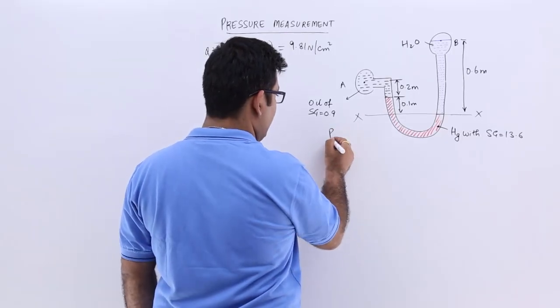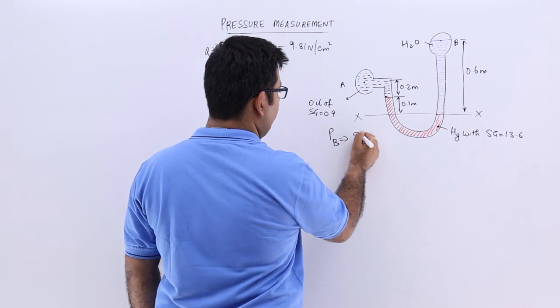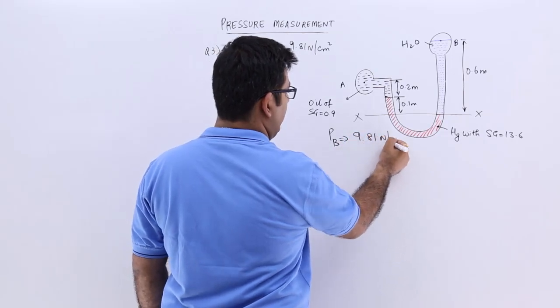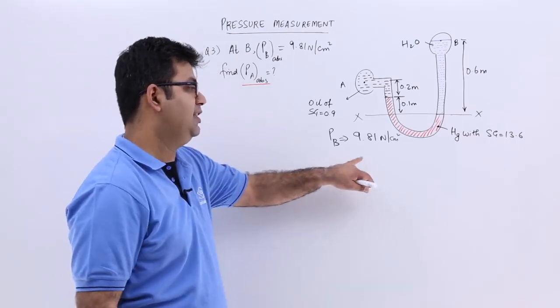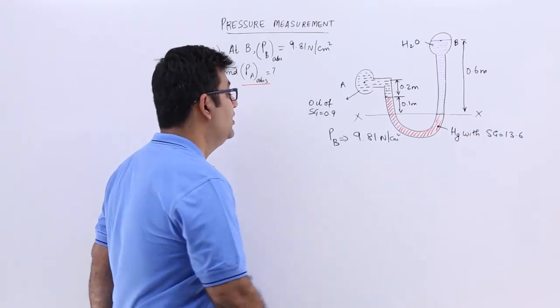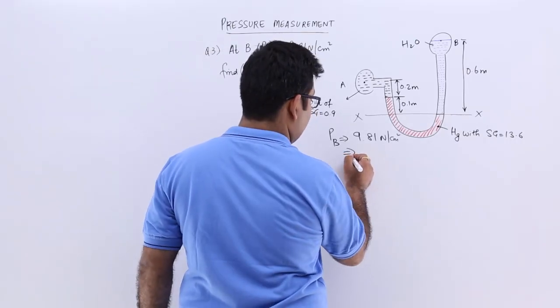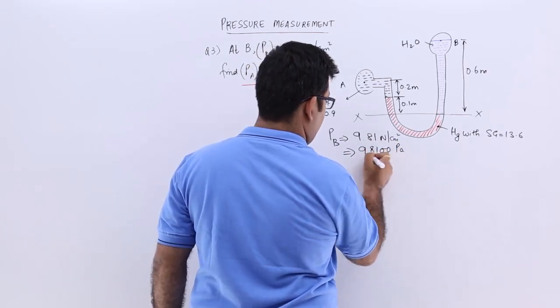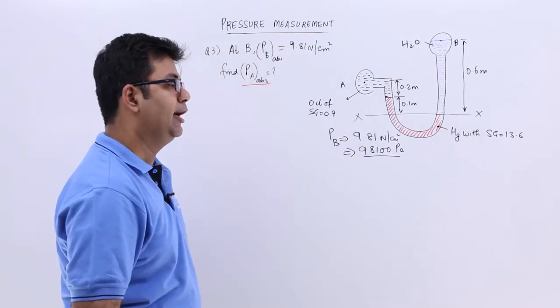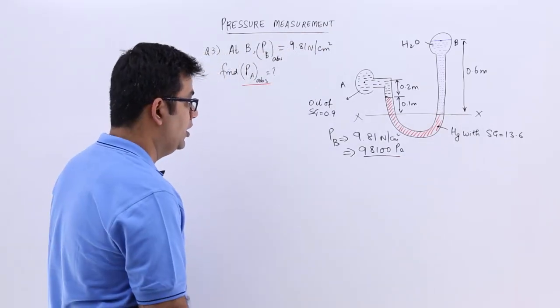So the pressure at point B is given to me as 9.81 newtons per centimeter square. This is in CGS units. I need to convert this into SI into Pascal. So this will be 98100 Pascal. So you multiply this by 10 to the power 4.